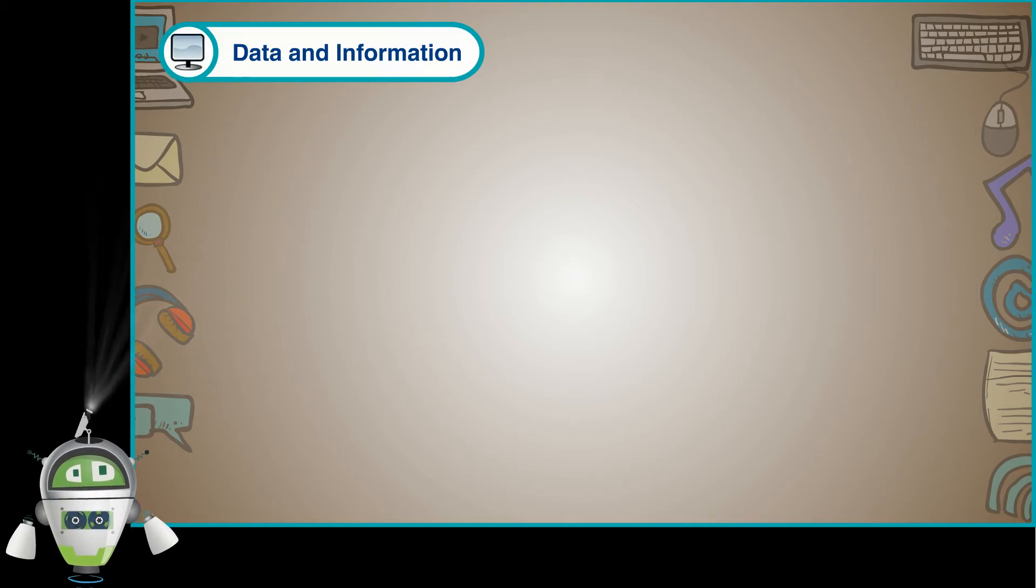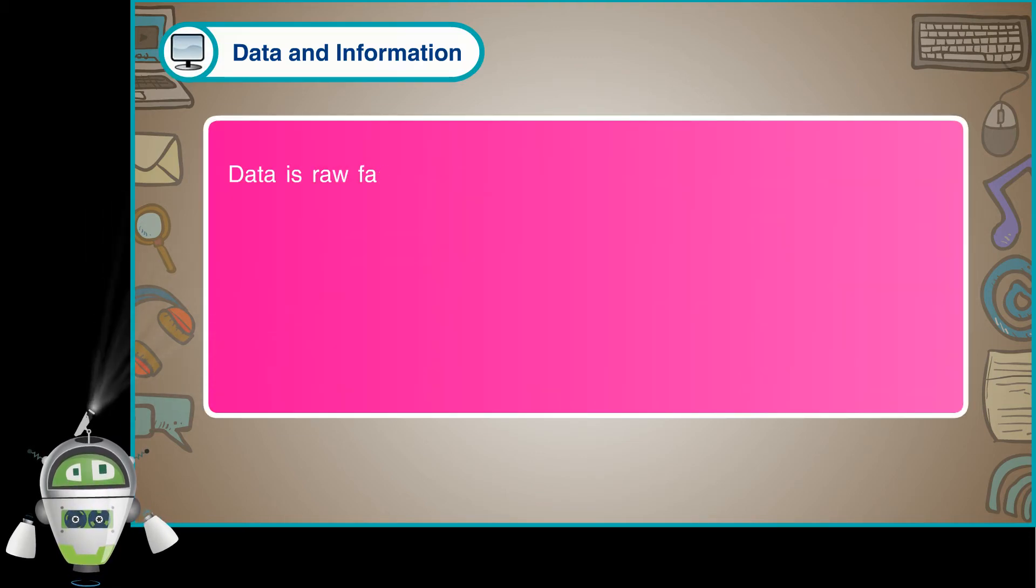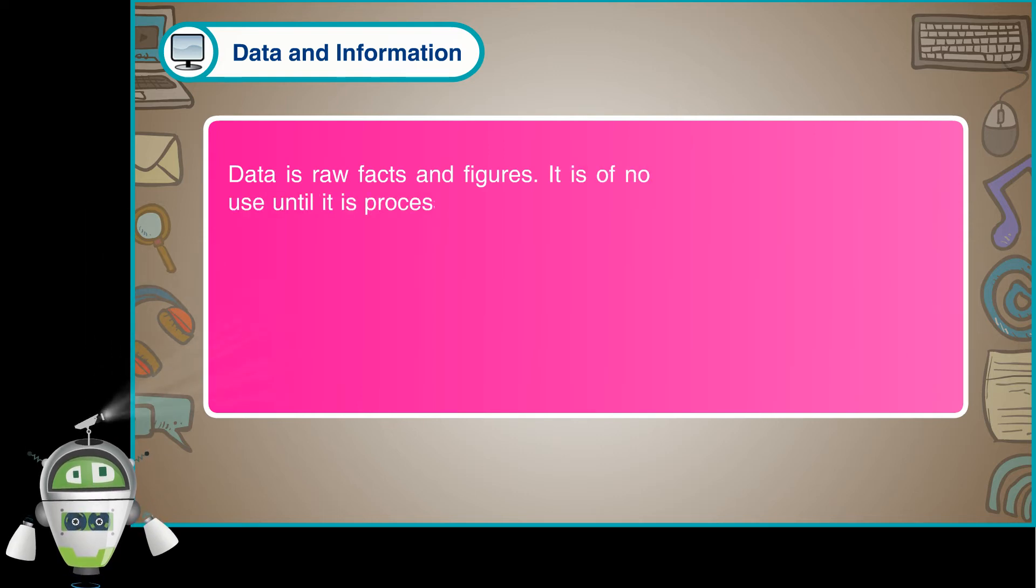Data and Information. Data is raw facts and figures. It is of no use until it is processed.